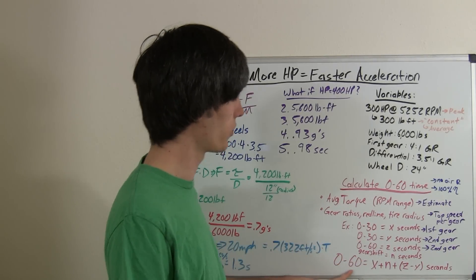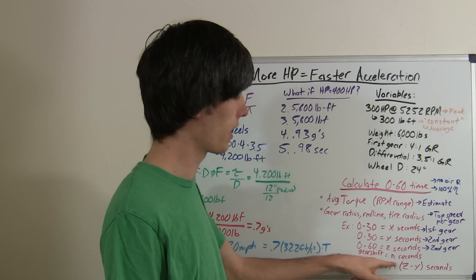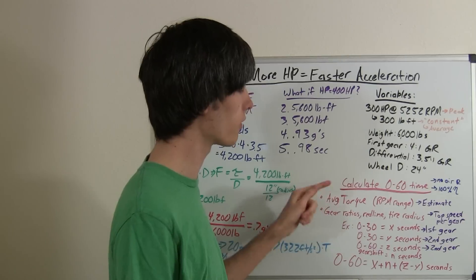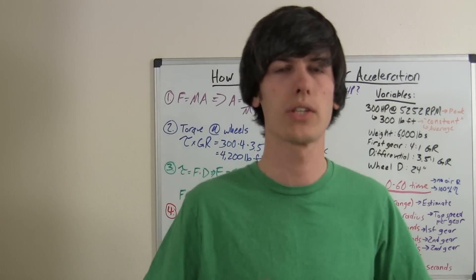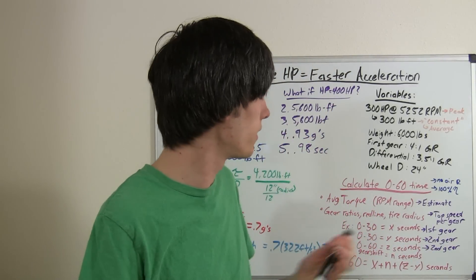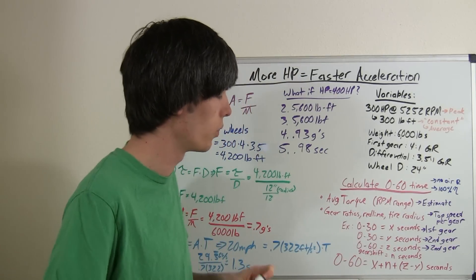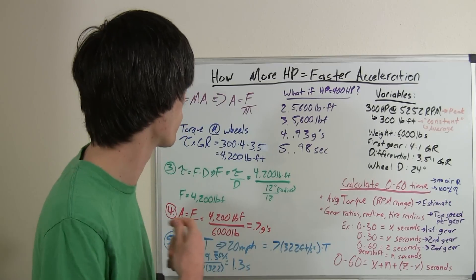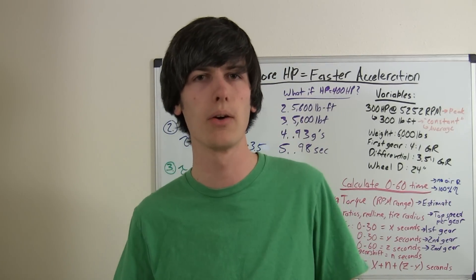So, what you'll do then to calculate your 0 to 60 time, you'll have X, the time it takes to get to 30, plus N, the time it takes to shift gears, plus Z minus Y, which is the time it takes to get from 30 to 60 miles an hour. And that will give you a theoretical time for your car, any car, perhaps you're modeling something, the time that it would take for it to get to 60 miles an hour, which is also relatively close to 100 kilometers an hour if you wanted to do everything in metric. That's about 62 miles an hour. So, if you have any questions or comments, feel free to leave them below. Thanks for watching.